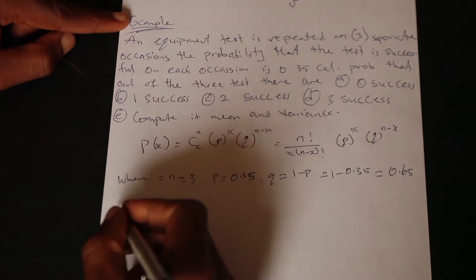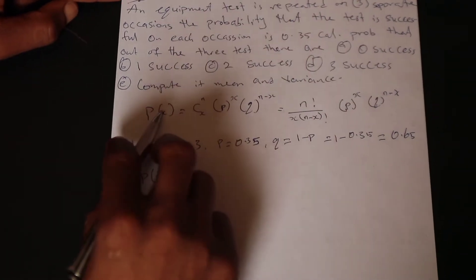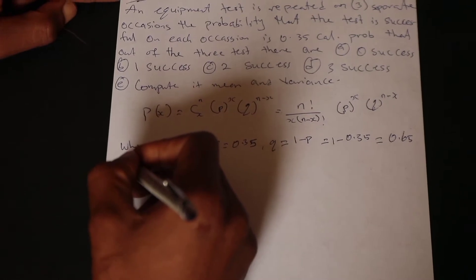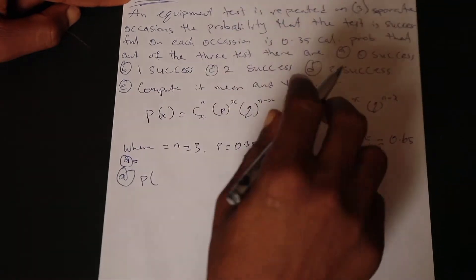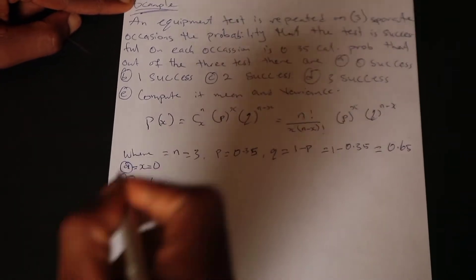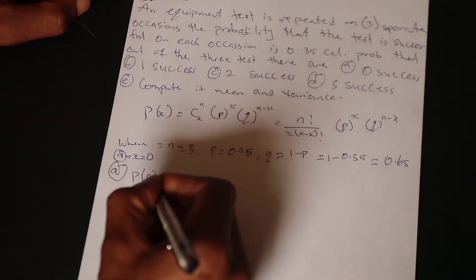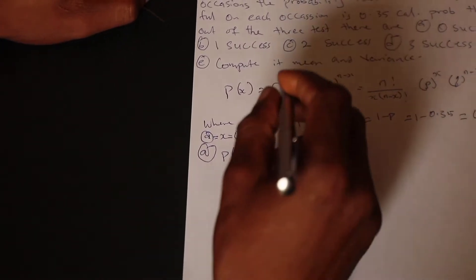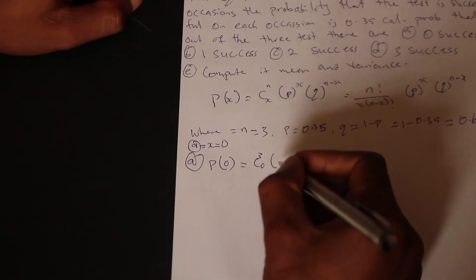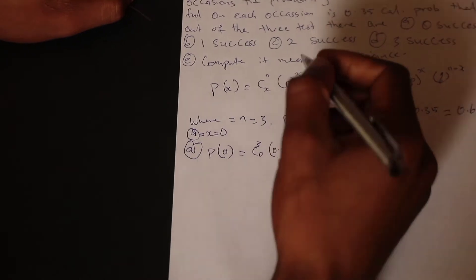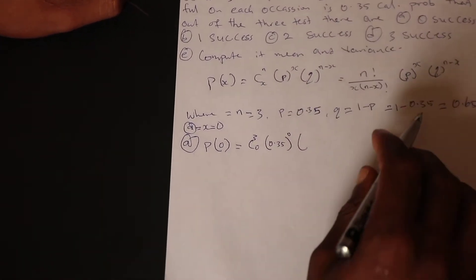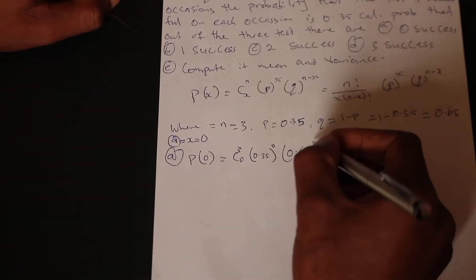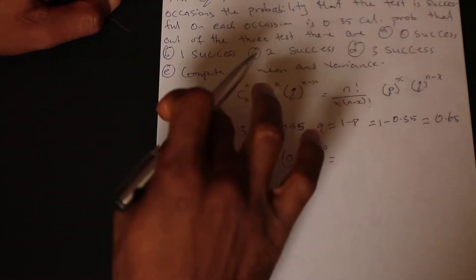Now for part a, zero successes: x equals 0. Using the formula, P(X=0) = C(3,0) · (0.35)^0 · (0.65)^(3−0). Expanding using factorials: 3! / [0! · 3!] · (0.35)^0 · (0.65)^3.